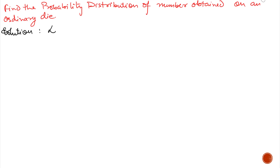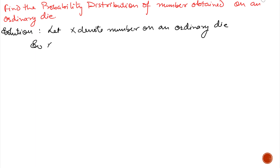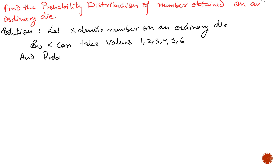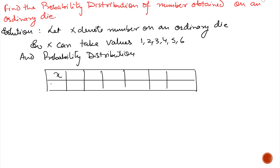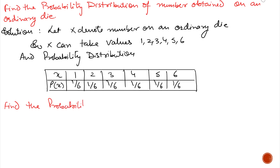Find the probability distribution of the number obtained on an ordinary dice. When we talk about a dice, we have 6 numbers, 1 to 6. Let X denote the number on an ordinary dice. So X can take values 1, 2, 3, 4, 5, and 6. The probability of all the events is 1 by 6. If we sum all, it will give you 1.